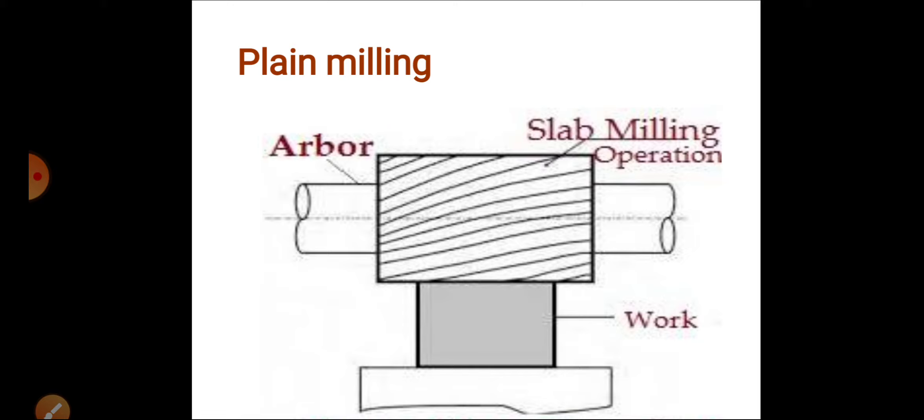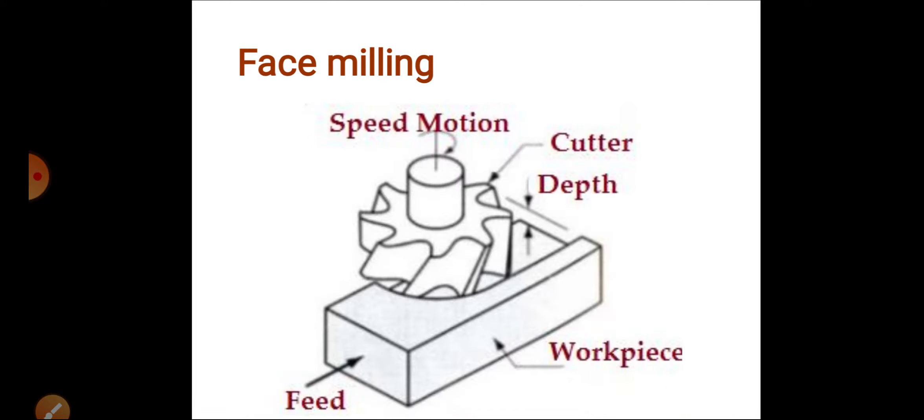Then it contains straight teeth. If the width is more, then helical or spiral teeth will be used. This is slab milling operation.